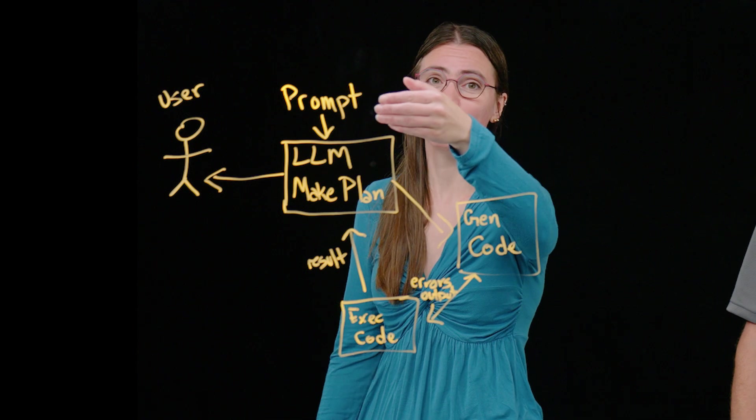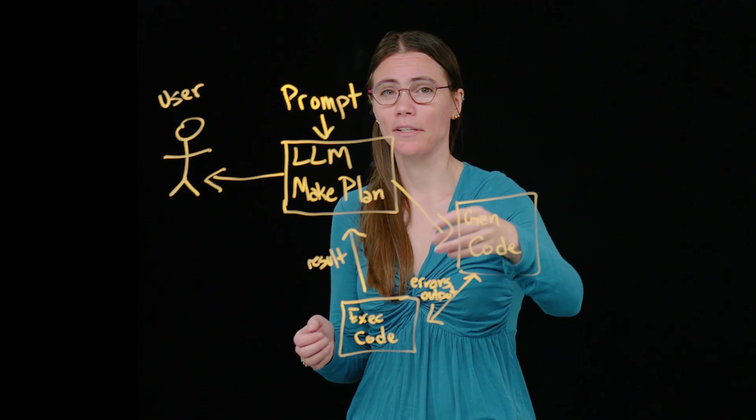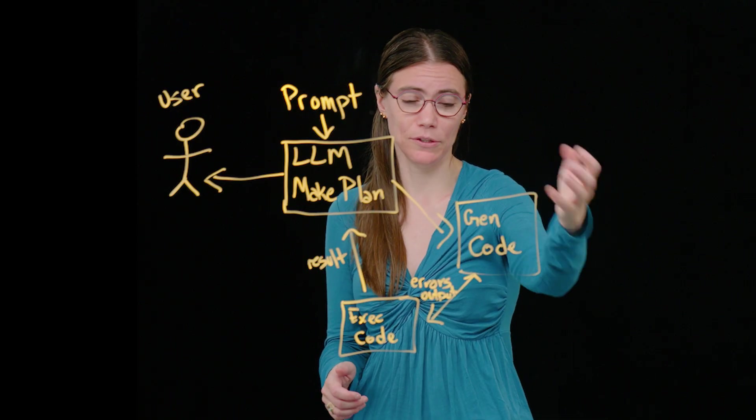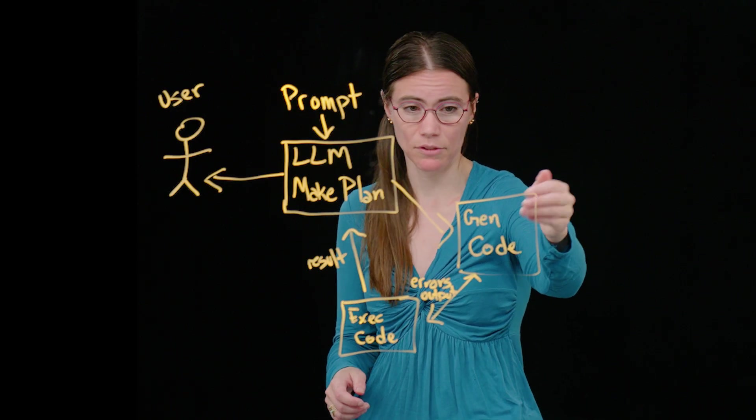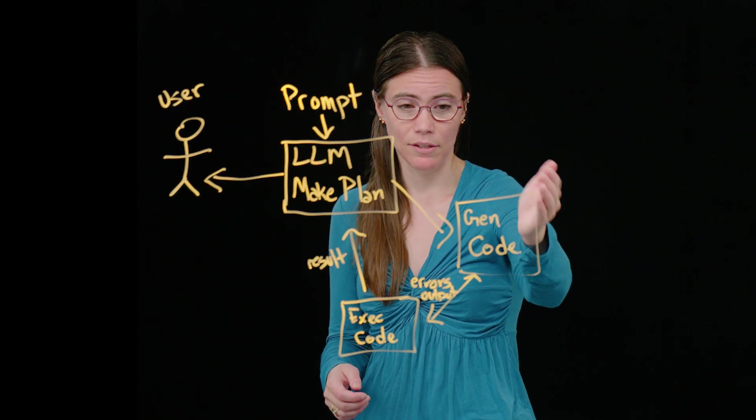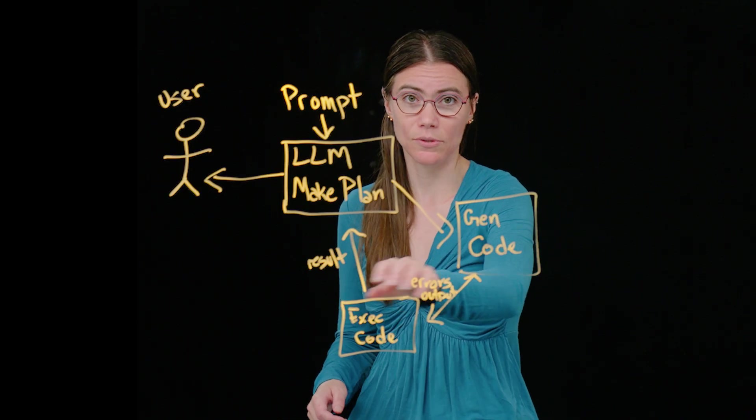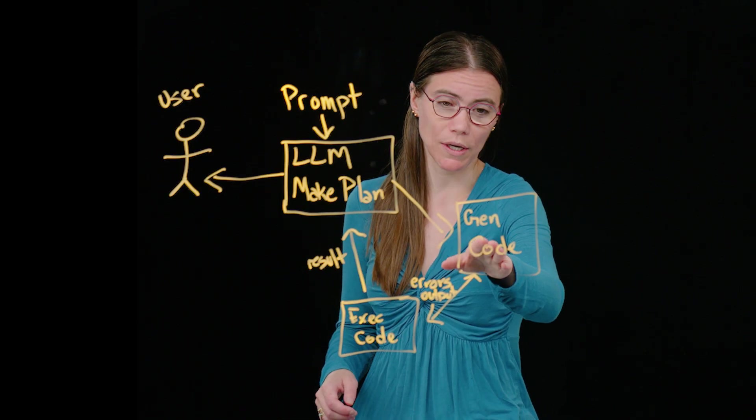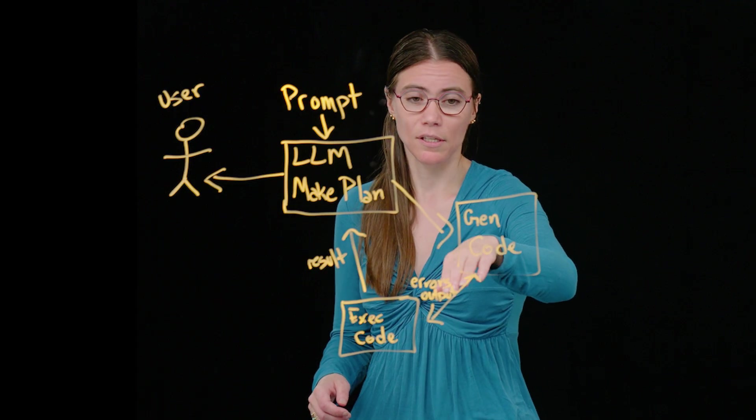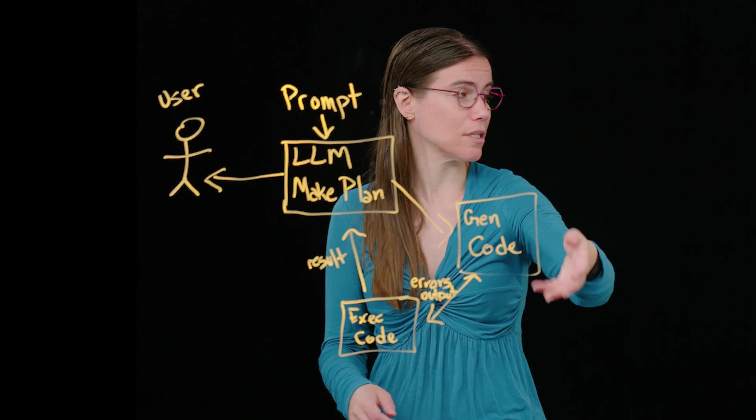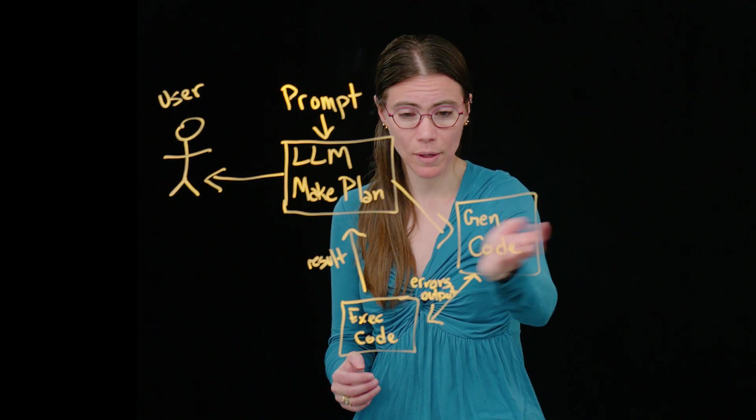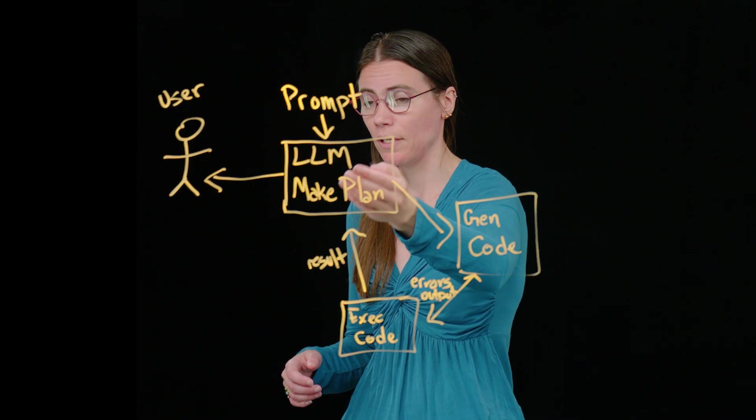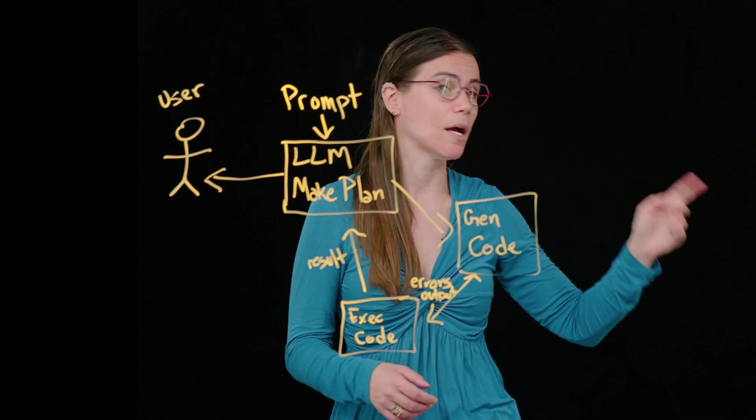The prompt comes in, something like build a calculator. The LLM makes a plan. It feeds that plan to a tool or another model that generates the code. The code gets sent to something that executes the code, tries to run it, and then it sends the errors and any output back to the generate code function. That tries again to generate the code based on the data it just got. We go back and forth like this until it works. Then we send the result to the original LLM that made the plan and send it to the user. The user's happy.